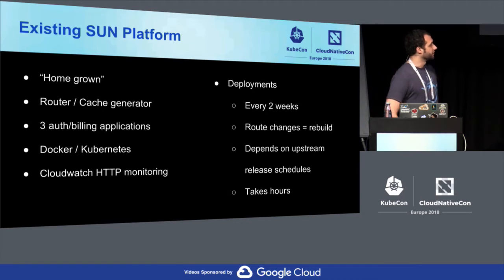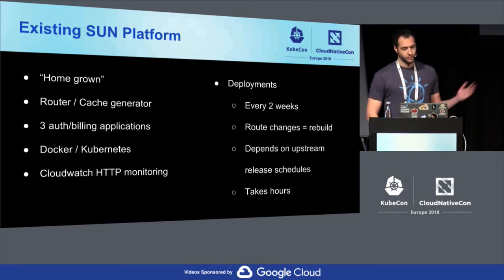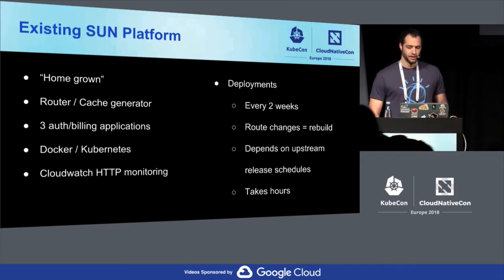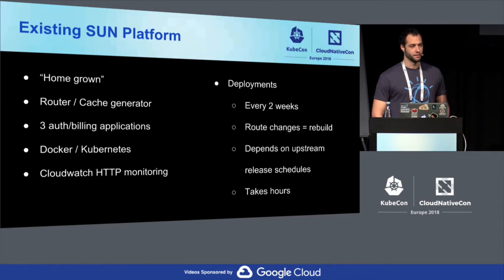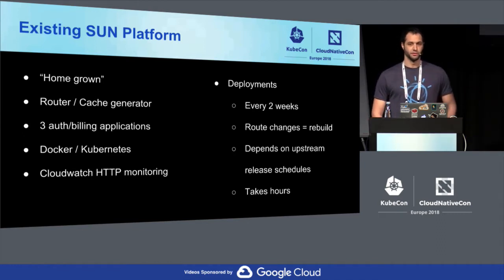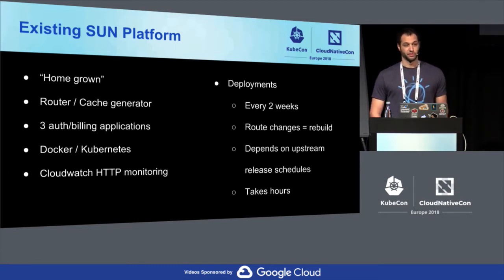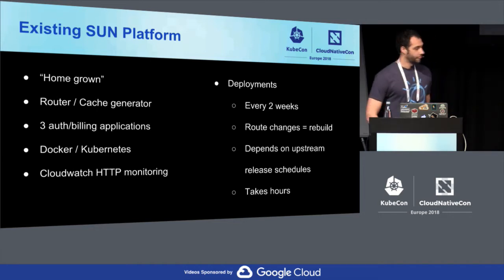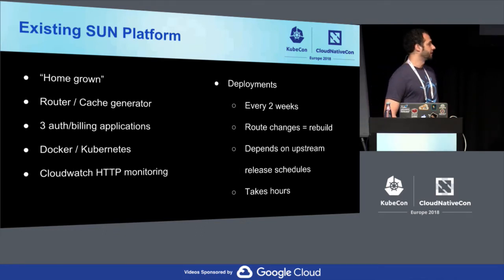Something to talk about is our deployments — we do them every two weeks, which seems very slow. Our homegrown solution currently requires a new build and deployment whenever we want to add a new API or new routes to our system. Our builds and deployments are really dependent on our upstream teams, so if a team wants to add a new endpoint, we align them all together every two weeks and become dependent on those changes in that stream.